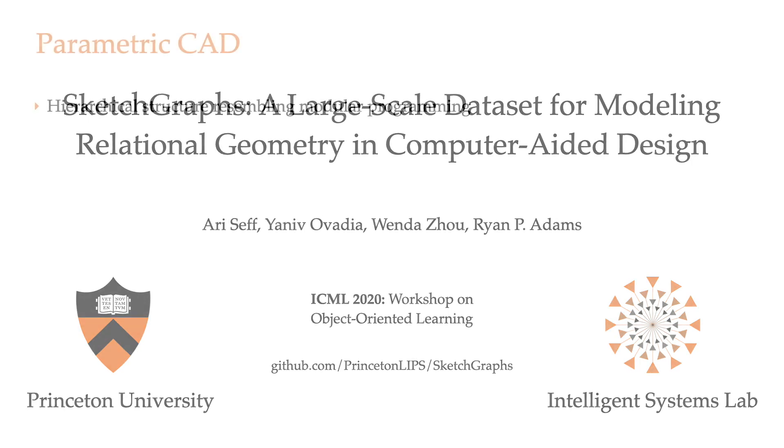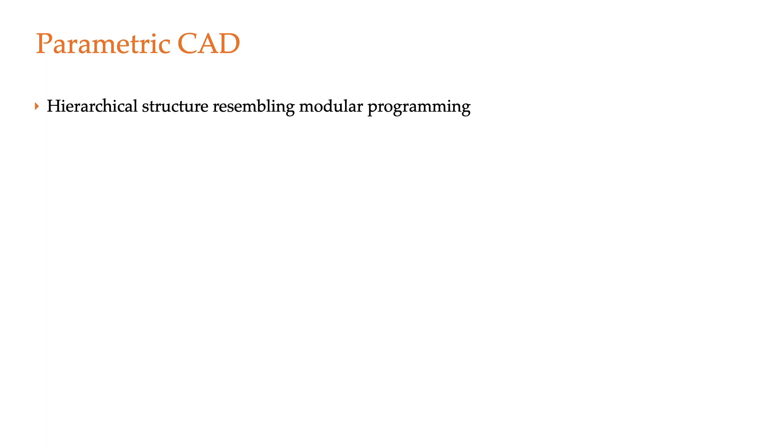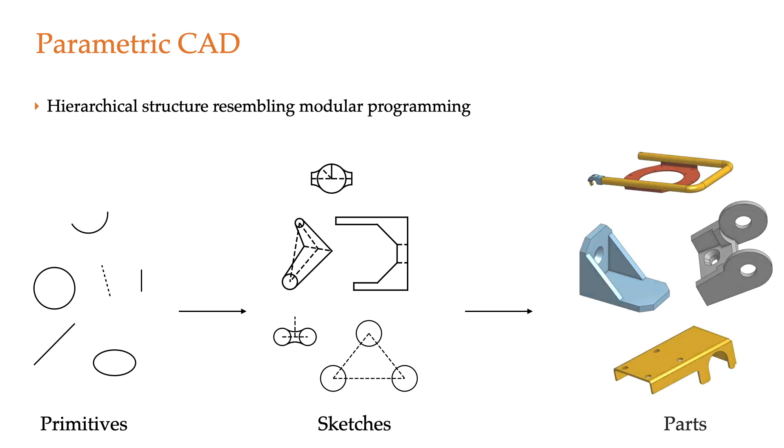The modern design paradigm for physical objects resembles modular programming, where simple subcomponents are connected to yield a more complex part. In parametric CAD, parts generally begin as a collection of 2D sketches composed of geometric primitives, such as line segments and circles, that interact via imposed constraints.